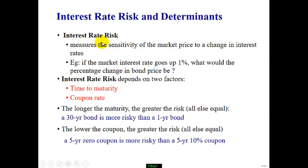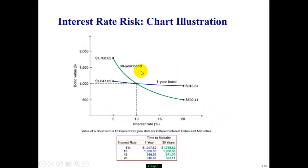Interest rate risk measures sensitivity of the bond price to a change in interest rates. For example, if the underlying interest rate goes up 1%, how much impact does this have on the bond price? Certain bonds are very sensitive, displayed by a steeper slope, while other types of bonds are much flatter, meaning they are not as sensitive to changes in interest rates.